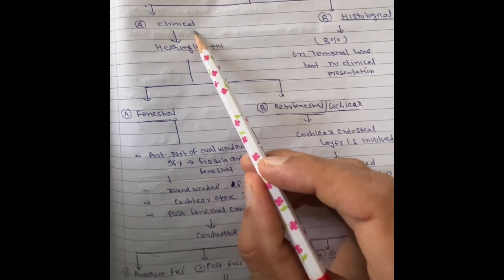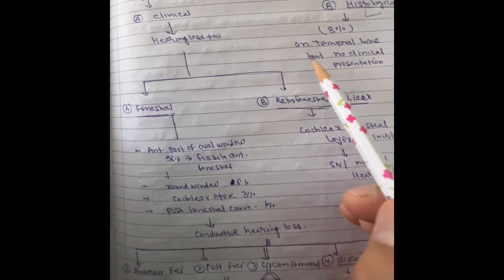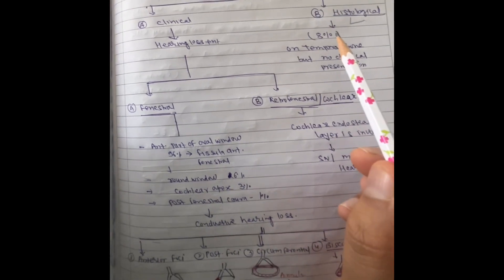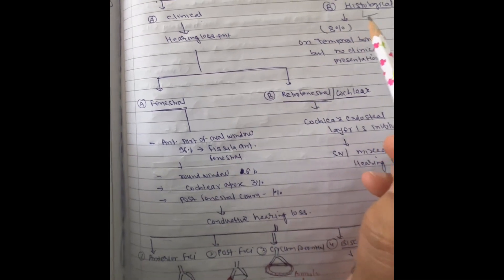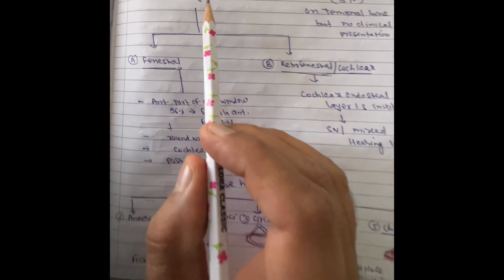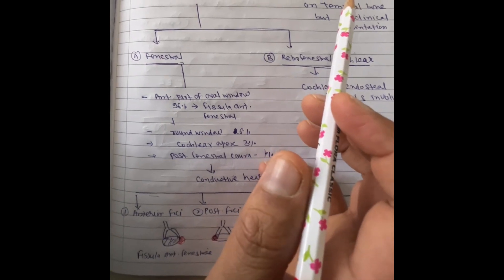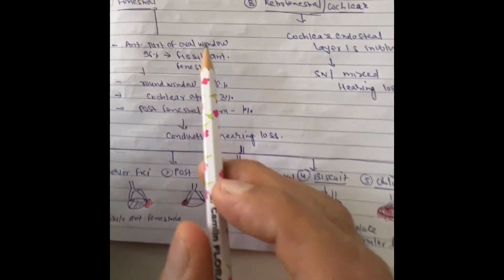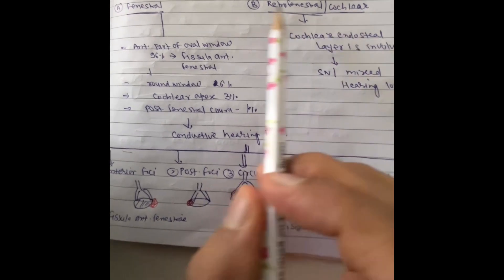There are two types of otosclerosis: clinical and histological. Histologically, if you study the temporal bone of deceased patients, about 8 percent of temporal bone studies show otosclerosis — it is quite prevalent but not always clinically represented as conductive hearing loss. In clinical otosclerosis, there is definitely either conductive or sensorineural hearing loss by audiogram, and clinical otosclerosis is further divided into fenestral and retrofenestral (cochlear) types.